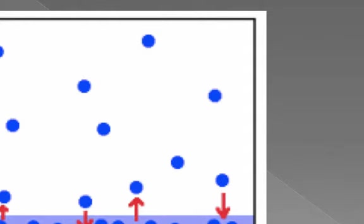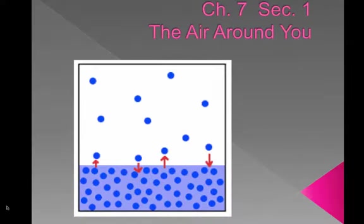Water vapor is invisible. The amount of water vapor in the air varies greatly from place to place and from time to time. Water vapor plays an important role in Earth's weather. Clouds form when water vapor condenses out of the air to form tiny droplets of liquid water or crystals of ice. If these droplets or crystals become heavy enough, they can fall as rain or snow.